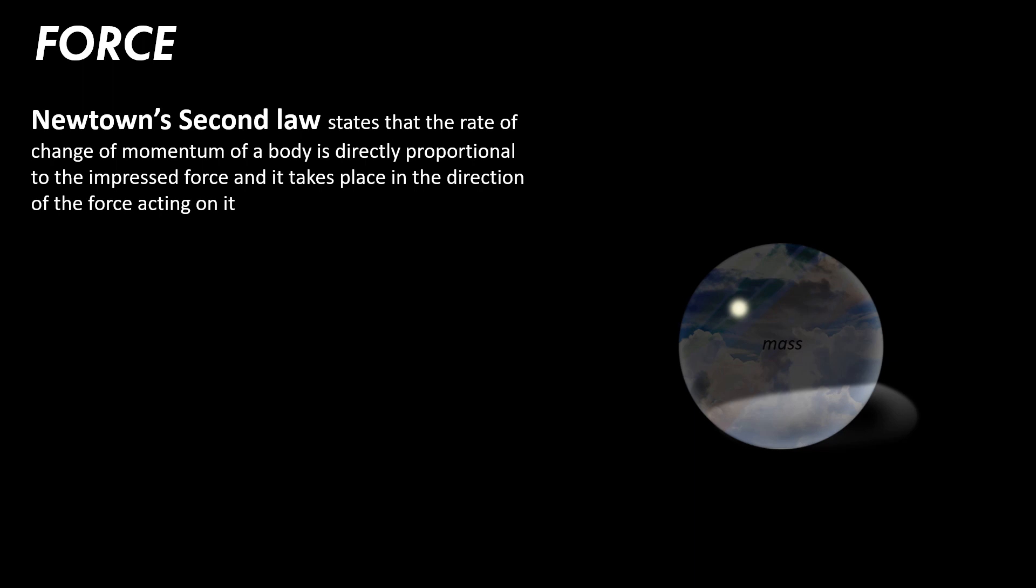Newton's Second Law states that the rate of change of momentum of a body is directly proportional to the impressed force and it takes place in the direction of the force acting on it. So guys, the ball just moved. As you can see, I applied the force towards the right side of the video and the ball moved towards the right side of the video. So the force moves the body in the direction of the applied force.